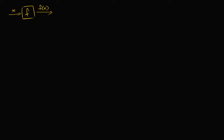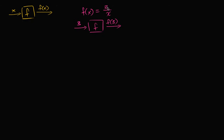So for example, let's say we have the function f of x is equal to two over x. So in this case, if that's my function f, and I were to input the number three, well f of three — we know how to figure that out. We've defined it right over here. It's going to be equal to two over three.